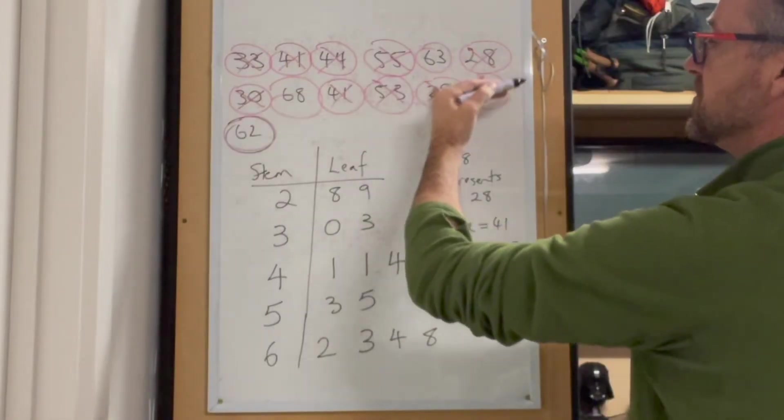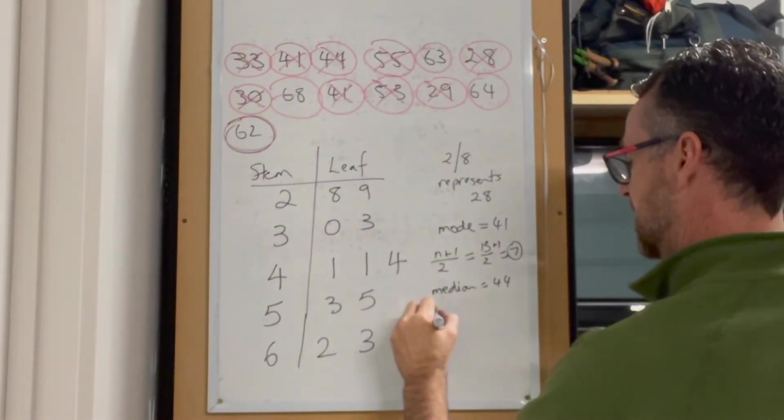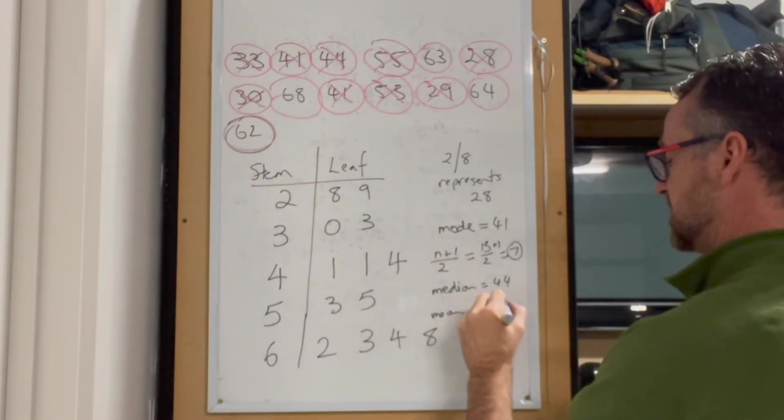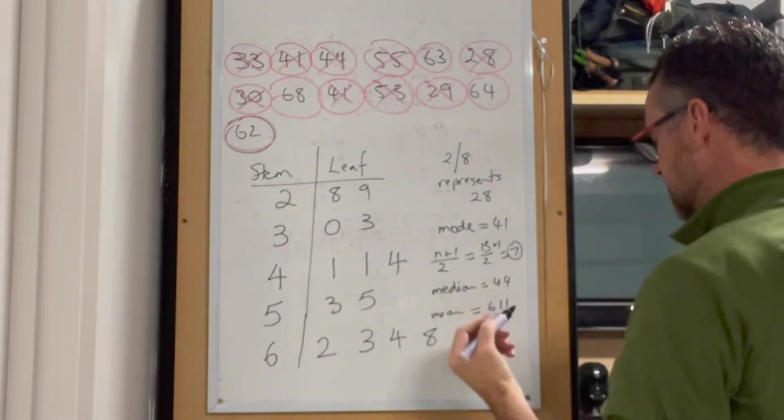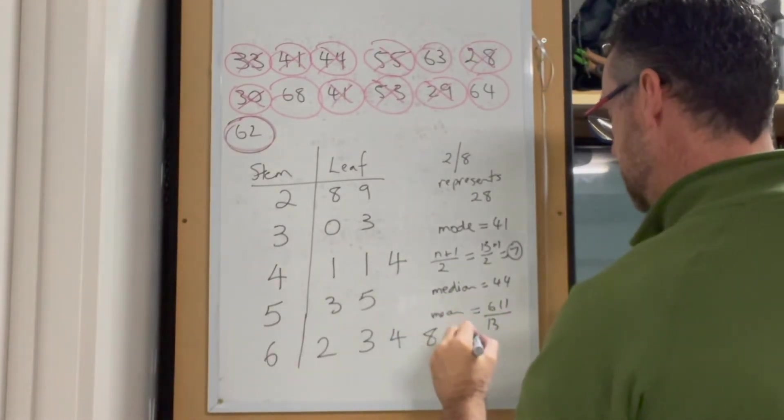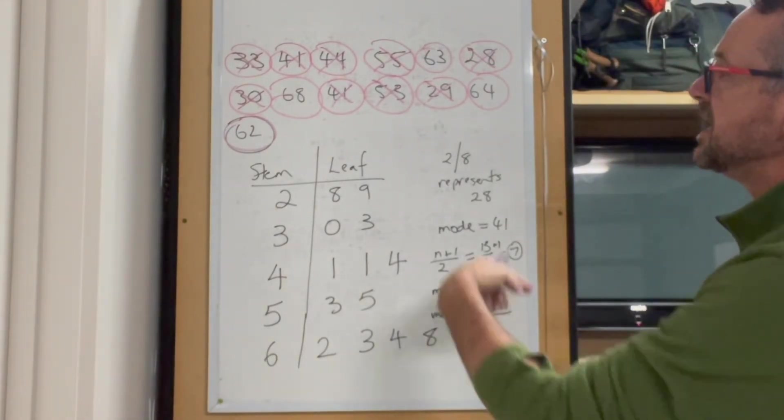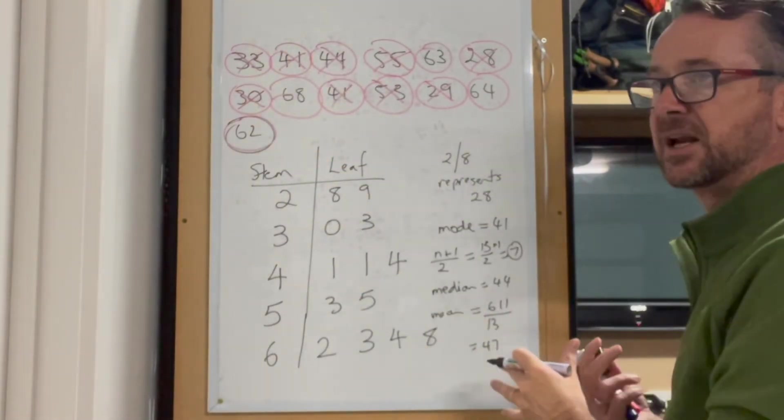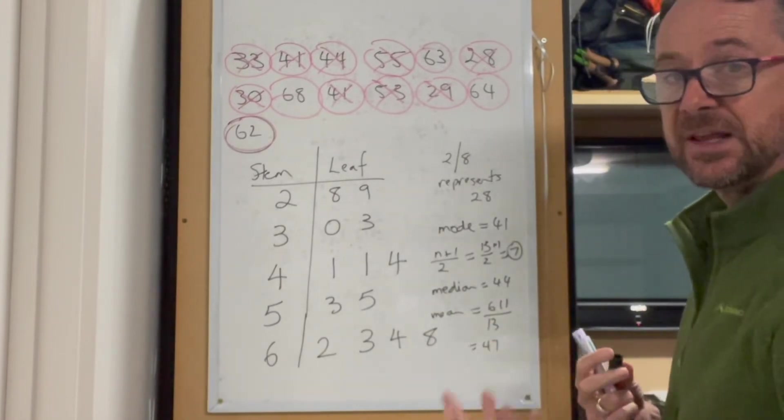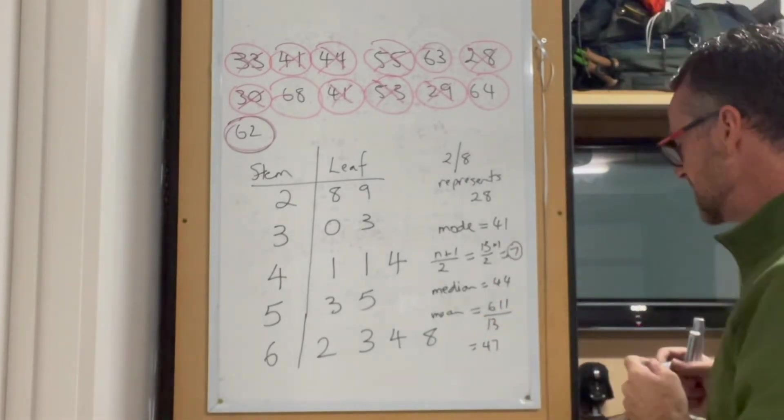Calculate the mean by adding all the values. Remember it's calc active. That's 611, and there are 13 values. 611 divided by 13 gives us a mean of 47. That fits comfortably into that set of values. If the answer was 94 or 23, you'd think that doesn't fit.